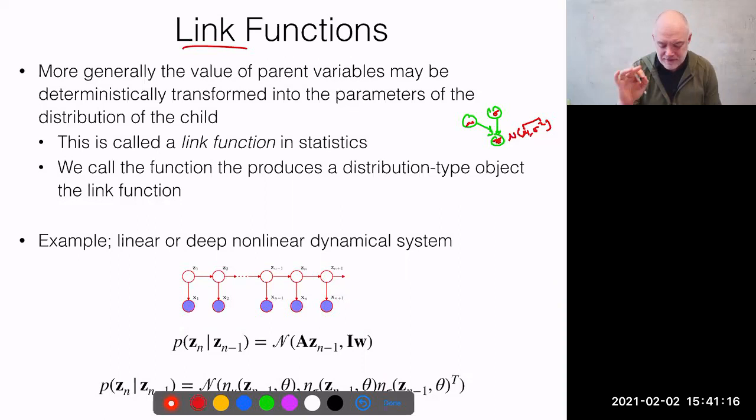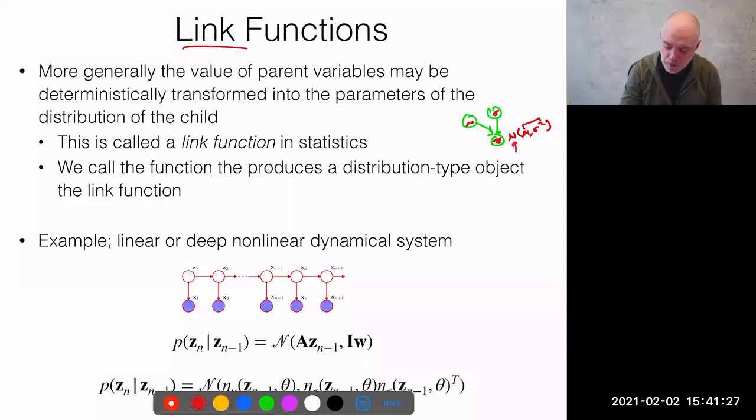We're going to use the term link function slightly differently — we're going to call the function that produces a distribution-type object the link function. So it's going to actually include the normal probability distribution object at the end as well.